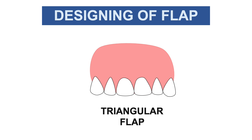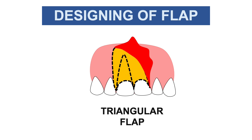The second flap is the triangular flap. As you can see in the figure, if a single tooth is associated with pathology, we give a horizontal incision along the gingival crevice with a single vertical relieving incision — not two. That is why it is also called a two-sided flap. After raising the flap, the pathology is associated with the apex of a single tooth. This flap is used when pathology involves a single tooth; if multiple teeth are involved, we use the trapezoidal flap.